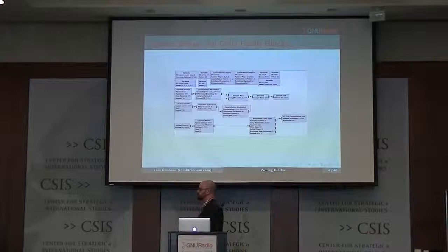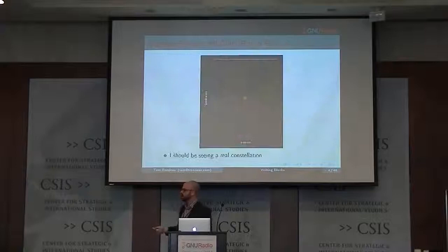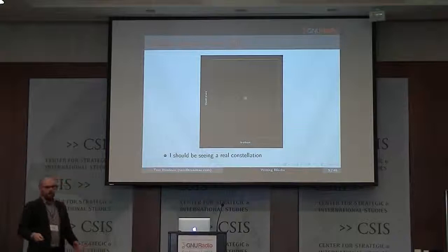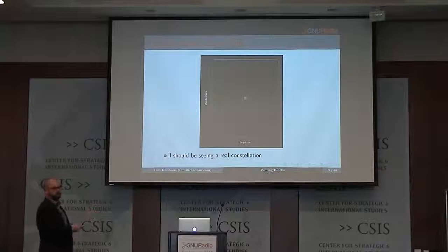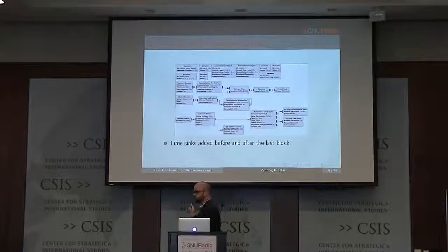I expect to see a constellation. This constellation up here is QPSK — I define it as a simple QPSK constellation. I run the signal, nothing happens. That's the first part where you stop and go 'shoot, I did something wrong.' It's a good thing I didn't waste time on the detector algorithm yet, because I don't know if the problem would be in the detector or my flow graph. We should be seeing a QPSK constellation but we're seeing just this blob of noise.